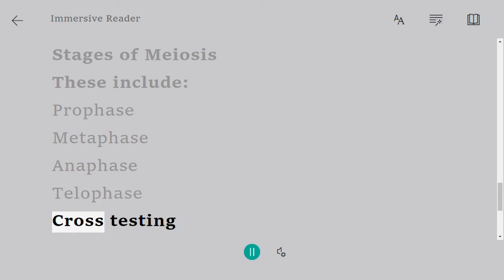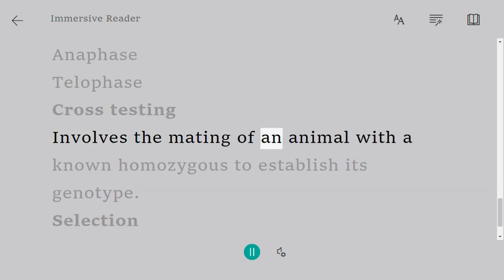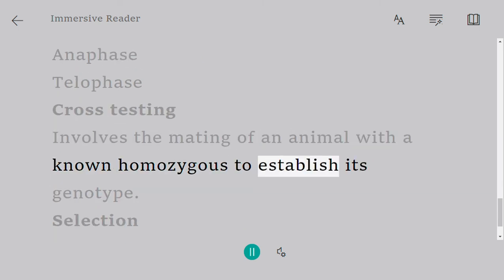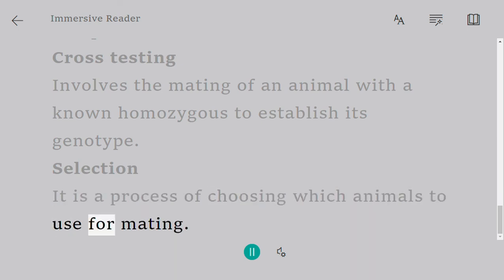Cross-testing involves the mating of an animal with a known homozygous to establish its genotype. Selection is a process of choosing which animals to use for mating.